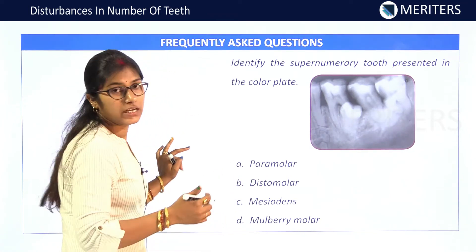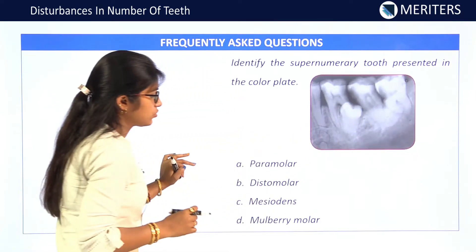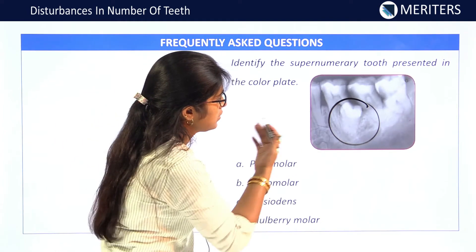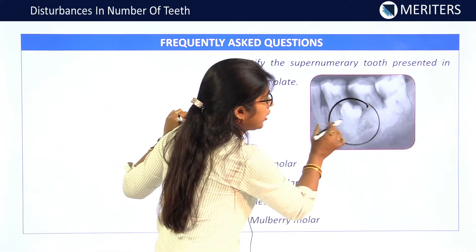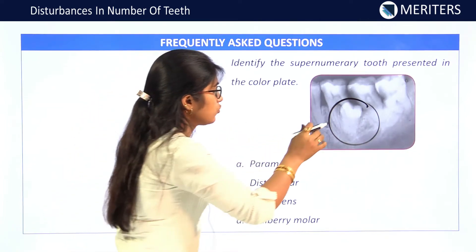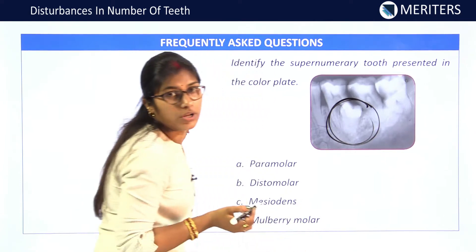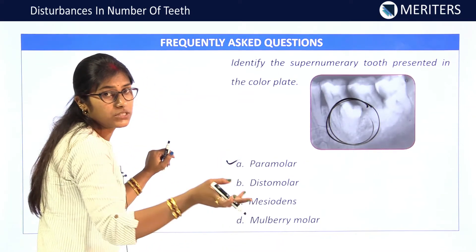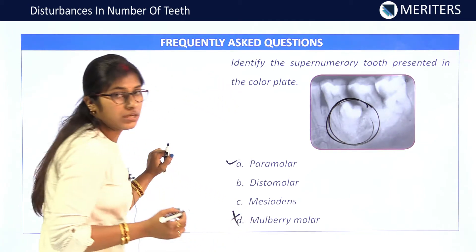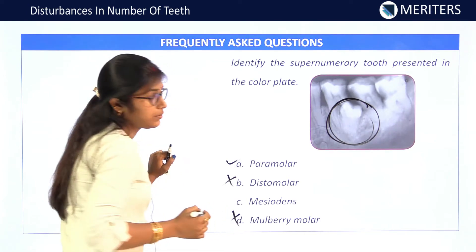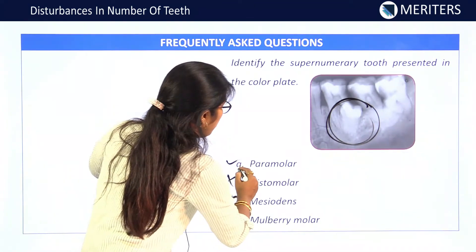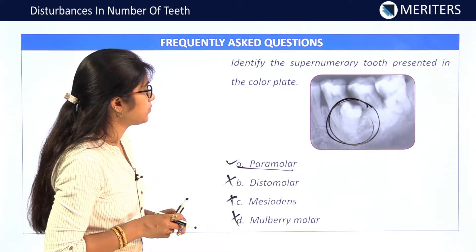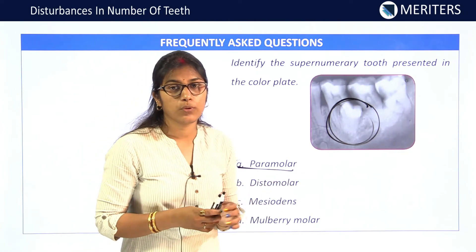Next MCQ: Identify the supernumerary tooth in the color plate showing the posterior molar region. A supernumerary tooth is visible — it is either buccal or lingual, not distal. So it is not a distomolar. It is not a mesiodens because mesiodens is in the anterior region. Mulberry molar is not a supernumerary tooth. Since it erupts buccal or lingual to the normal molar, the correct answer is paramolar.